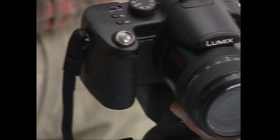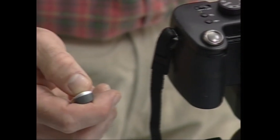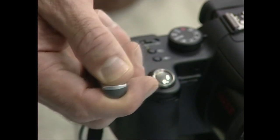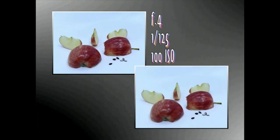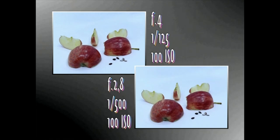Jakin badakigu sentsorera iristen den argi kantitatea aldatu egin daitekeela, diafragmaren irekidura edo obturazio lastertasuna aldatuz. Horrezaz gainera, argazki kameraren sentikortasuna ere kontuan hartu behar da. Horregatik, argi kantitate jakin batez argazkia egin nahi badugu, parametro horien hainbat konbinaketa erabil ditzakegu. Sani arauaren taula osoa hau da.